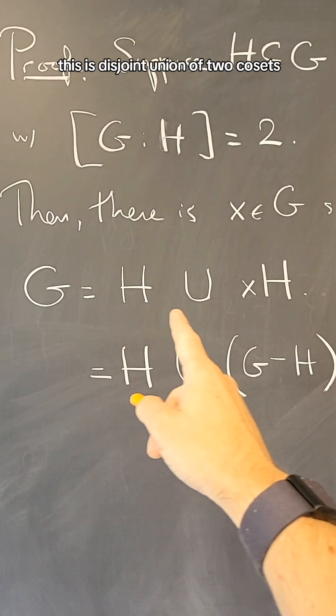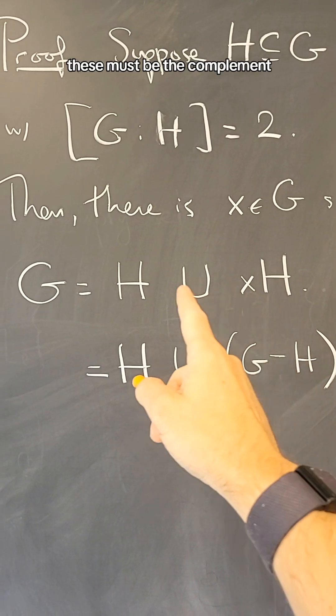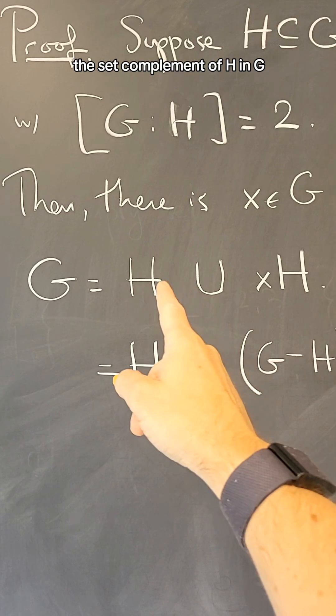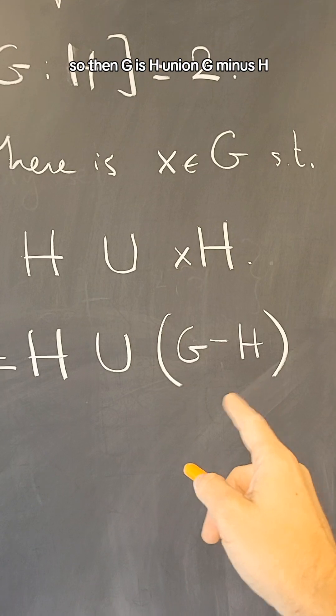Since this is disjoint union of two cosets, this must be the complement, the set complement of H in G. So then G is H union G minus H.